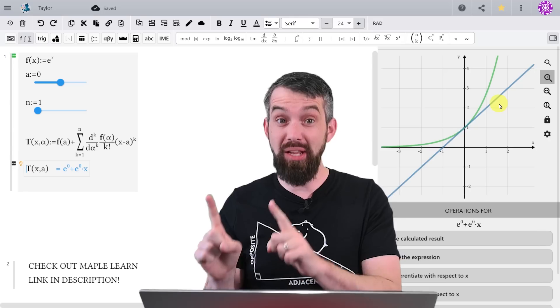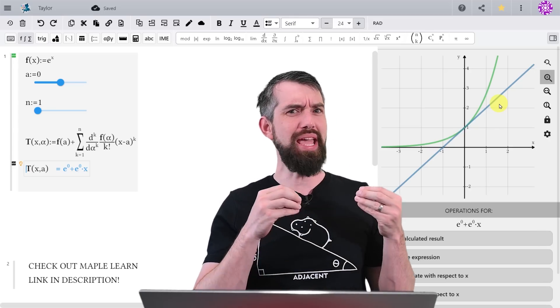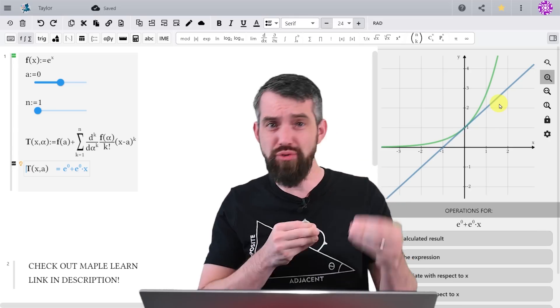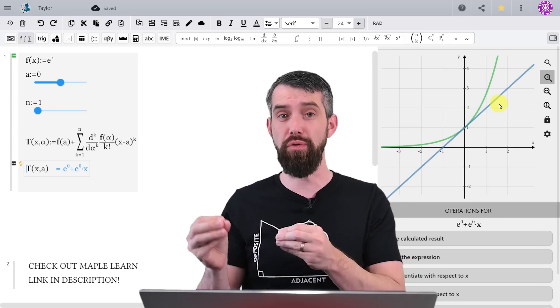Then the idea of a Taylor polynomial is, well, what if we had higher order terms, quadratic terms, cubic terms, and so forth.